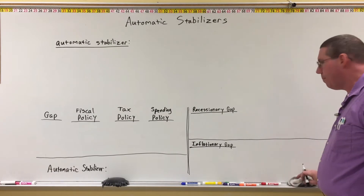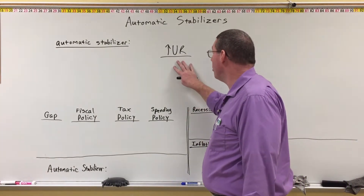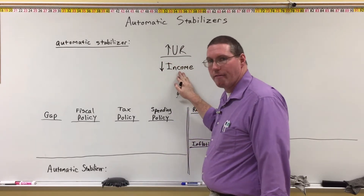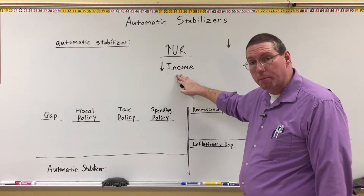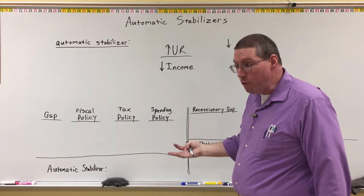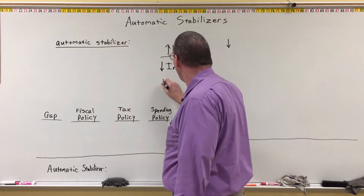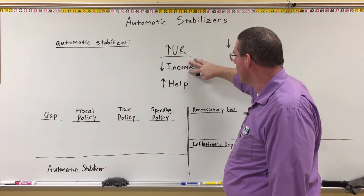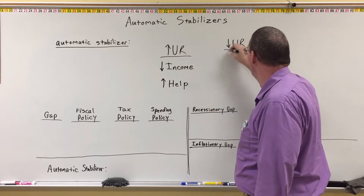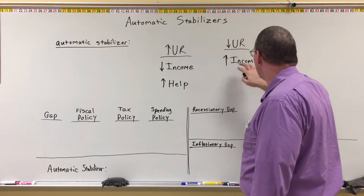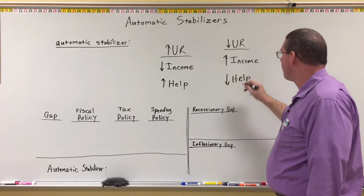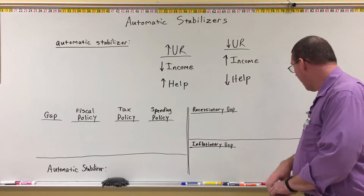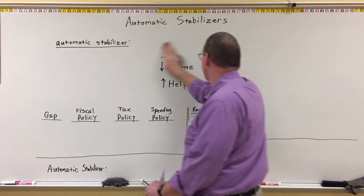There's something interesting that happens when people are employed and unemployed. When the unemployment rate is high, there are a lot of people out of work, and because they're out of work, income in the economy is low. People don't have as much money to pay their bills, so there's an increase in need for help from the government. But when unemployment is low, people's incomes are higher and they don't need as much help from the government. This relates to the idea of automatic stabilizers.